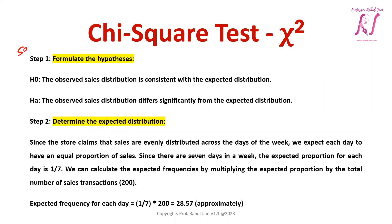We are going to do the solution step by step. Step 1 is to formulate the hypothesis. The null hypothesis is: the observed sales distribution is consistent with the expected distribution. The alternative hypothesis is: the observed sales distribution differs significantly from the expected distribution.